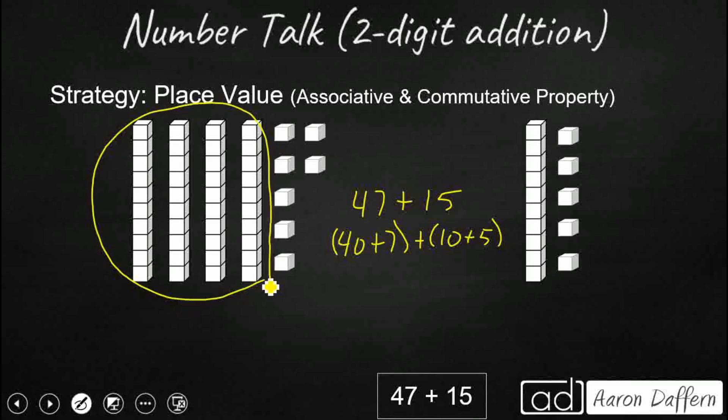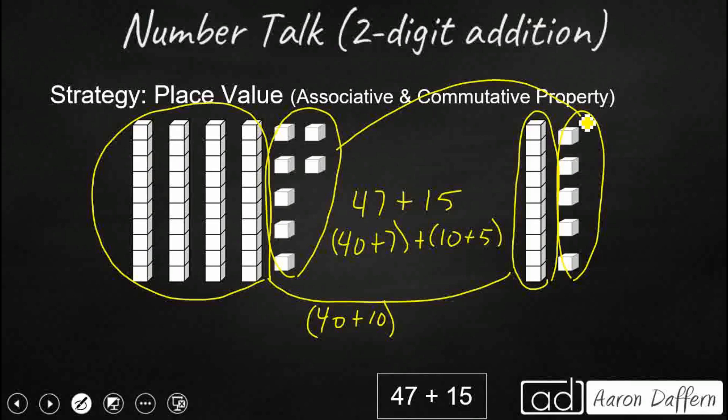Because what I want here is I want my 40 and my 10. I'm just going to add my tens first. So I'm going to do 40 plus 10. Then I'm going to take my ones second. So then I'm going to do my 7 plus 5. So if I were to add my tens, 40 and 10, that's 50. 7 and 5, that's 12. It's still going to get me up to 62, but that's just a different way to add this up.